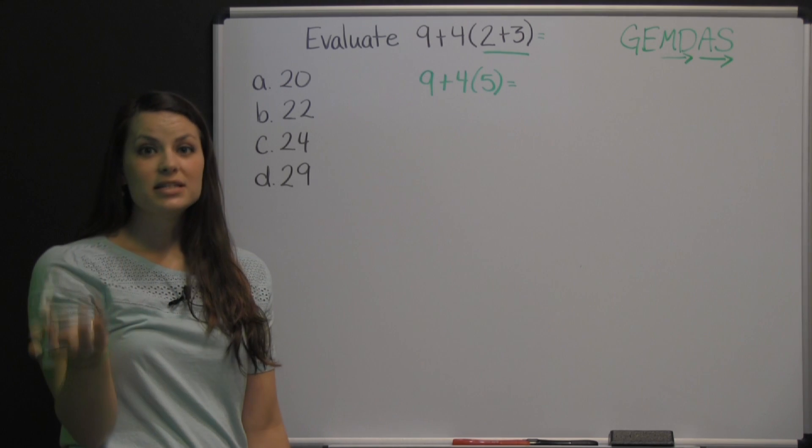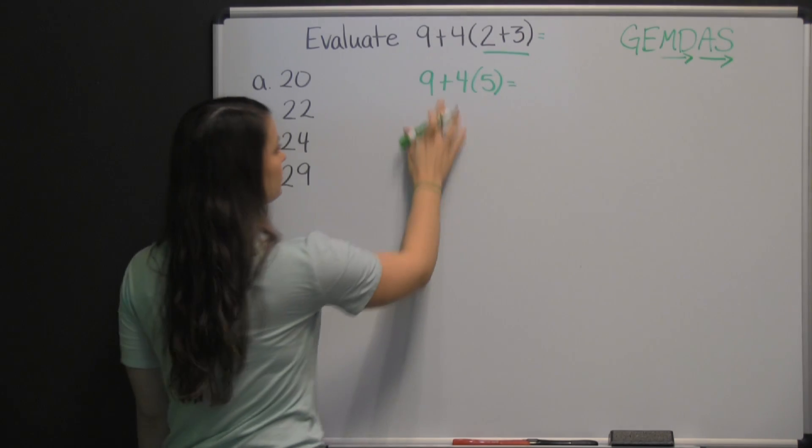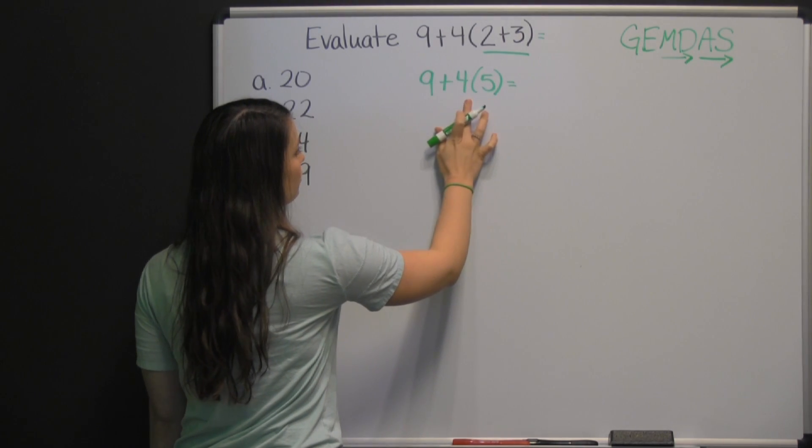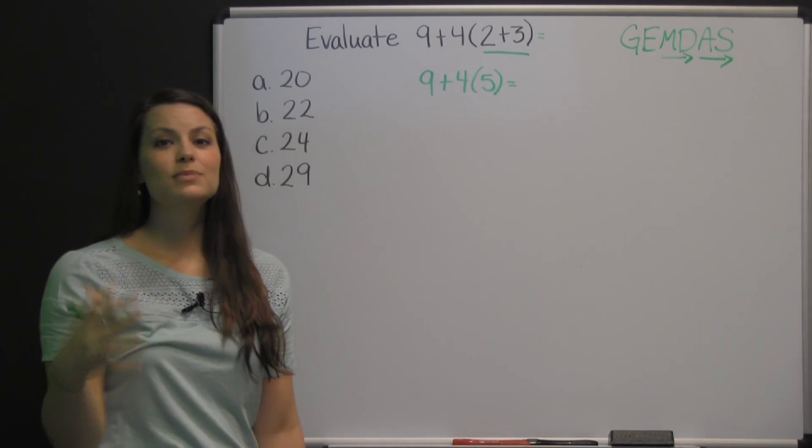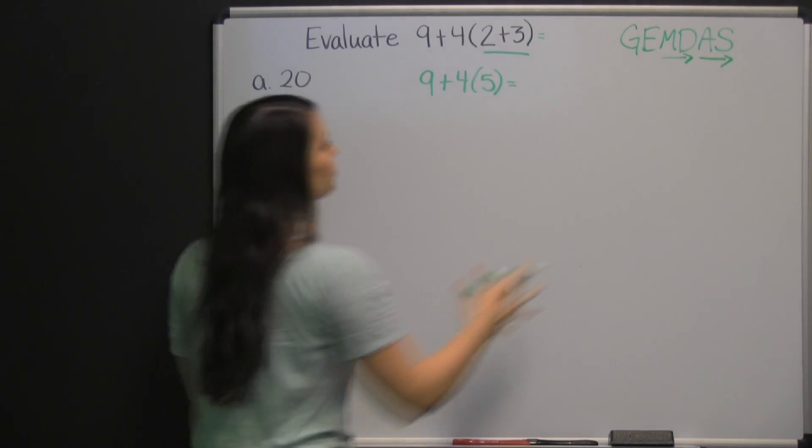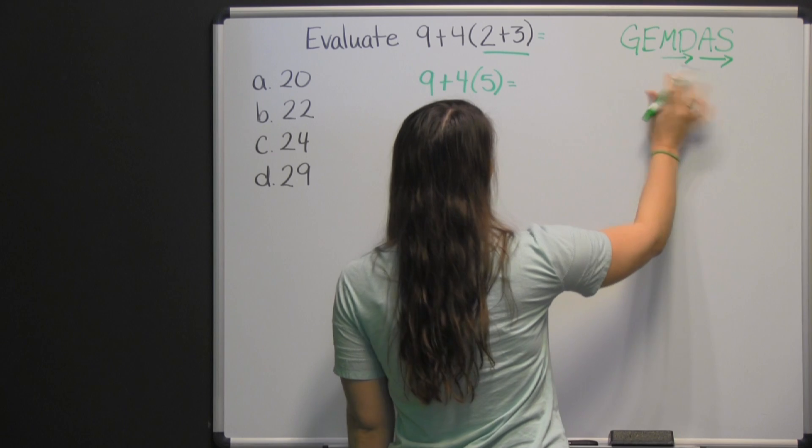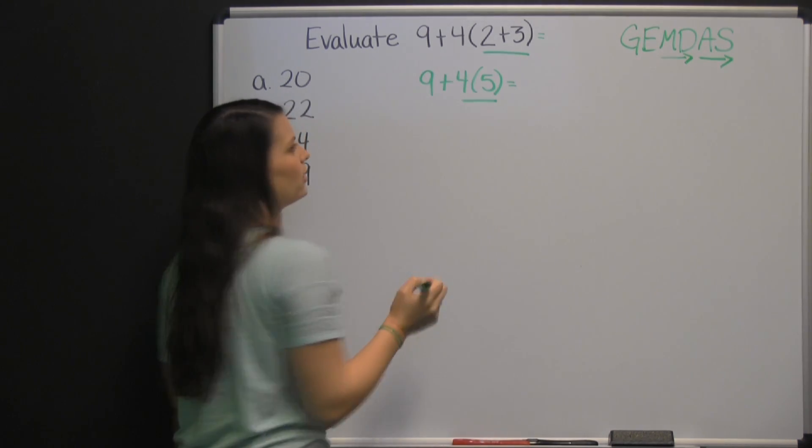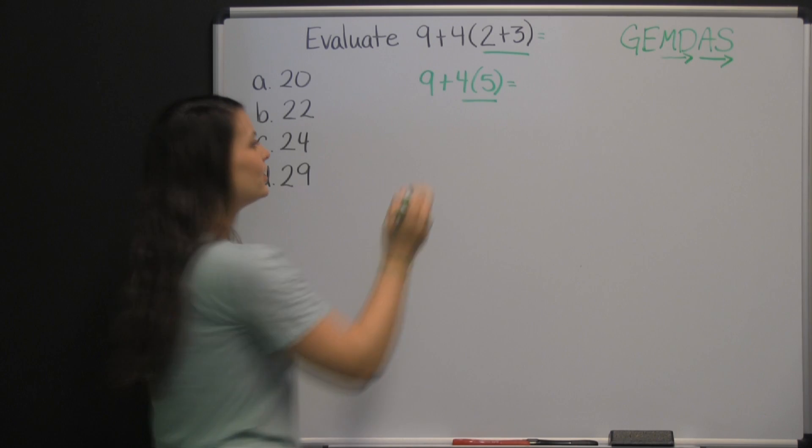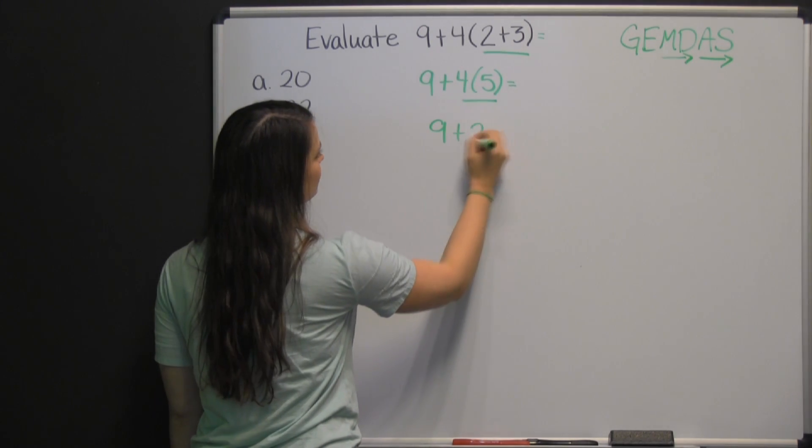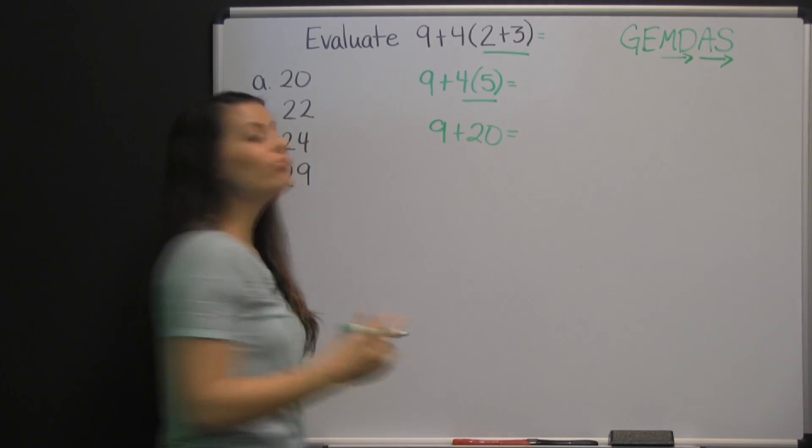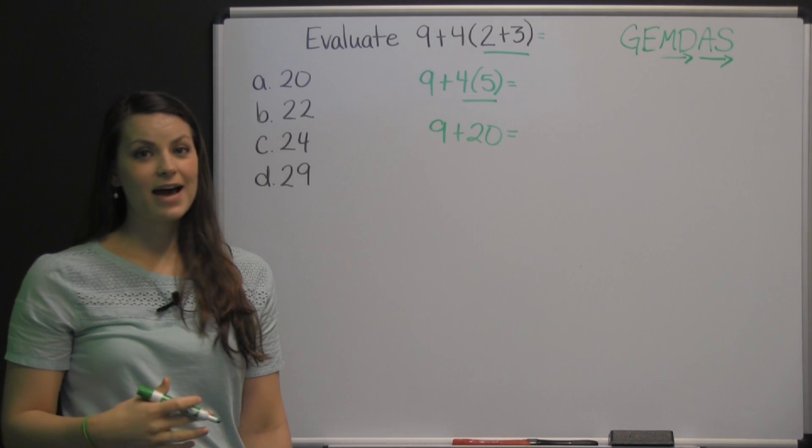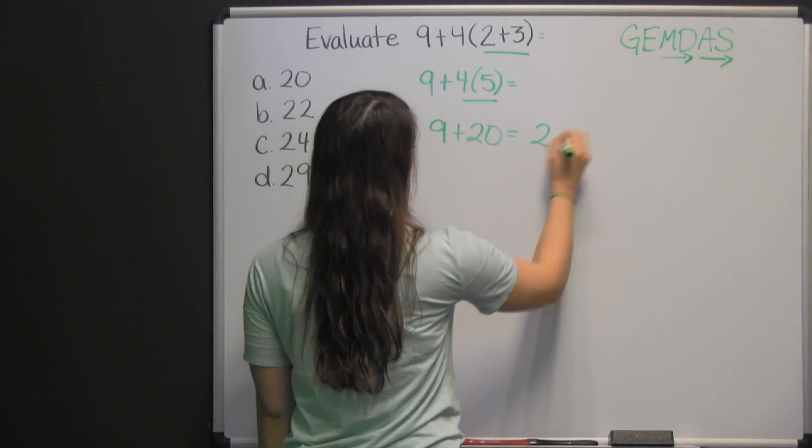Now we have addition and multiplication. Here's our addition, and then the 4 with the parentheses around the 5 is multiplication. So according to our order of operations, we would need to multiply before we add. So we're going to multiply the 4 times 5. Now we have 9 plus 20, and the only thing left to do is add, which gives us 29.